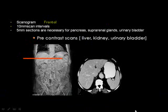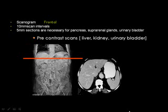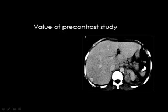After we start the sections, you can see this is the liver, this is the stomach with gastrographene inside, and this is the spine. In another section you can see the liver, the aorta, and the IVC.